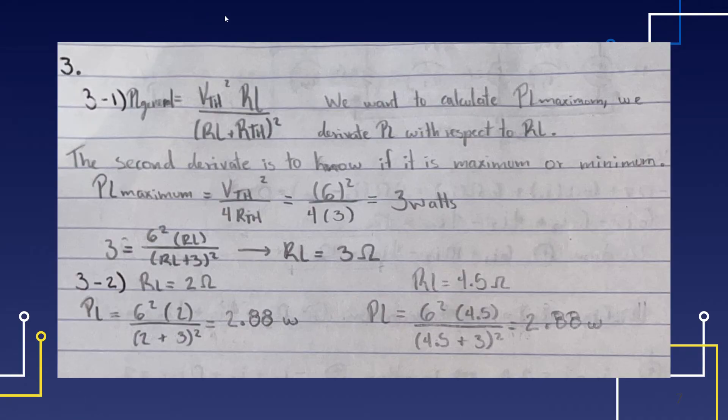Then we're asked the value of RL, which will be a load resistor, and we want to calculate the PL maximum. So we have to use the PL general and derivate PL with respect to RL. And if we derivate that again, we have the PL maximum, and that's the formula. We have 3 watts, and RL will be 3 ohms.